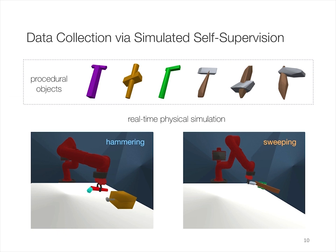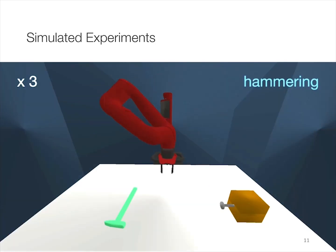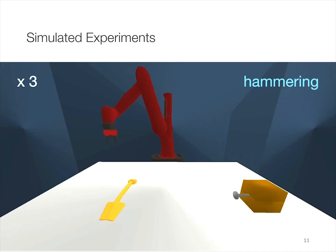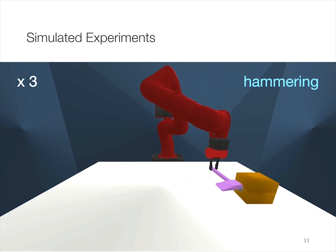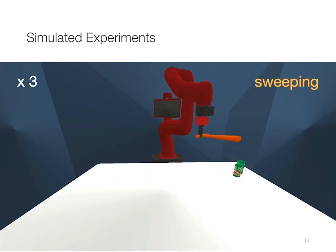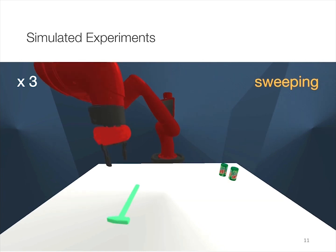We develop a simulated self-supervised learning framework for training the two modules jointly. Though our model is general to a diverse set of tasks, we choose two common but challenging tasks — hammering and sweeping — to run our experiments. We allow simulated robot trials to collect the large-scale training dataset, and we procedurally generate diverse 3D objects to generalize to unseen objects. After being trained with 1.5 million robot trials with procedural objects, our model is able to learn to use realistic shapes as tools to complete the tasks.